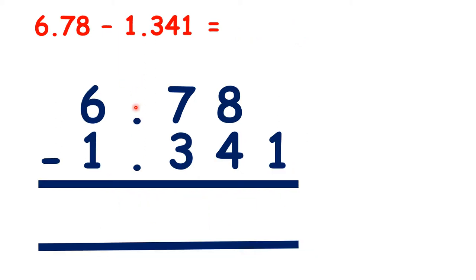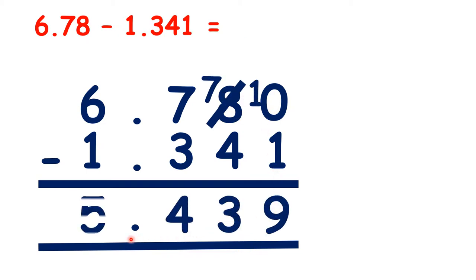Now, again the decimal points are lined up, so the place values are lined up. So we can copy down the decimal point into our answer, and here we need to write a zero in the first line of our question, so that we can subtract as normal. That gives us our answer, 5.439.